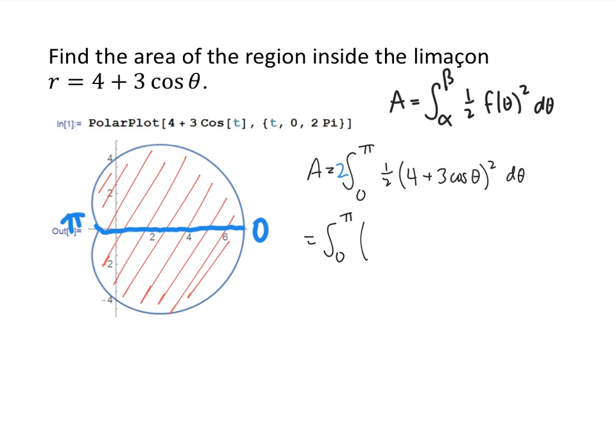Now when we multiply out 4 plus 3 cosine theta when we square that we're going to get 16 plus 24 cosine theta plus 9 cosine squared of theta.